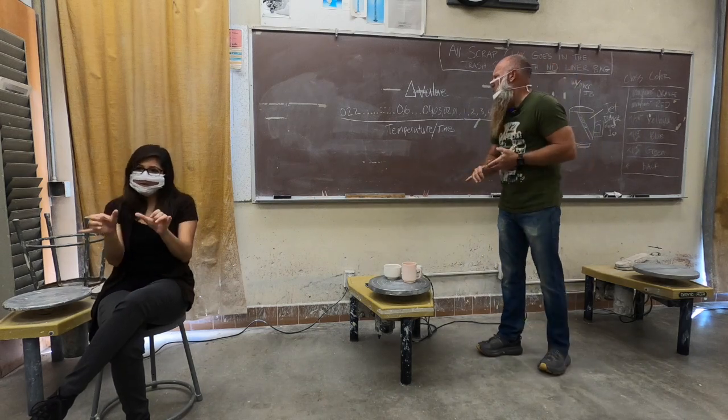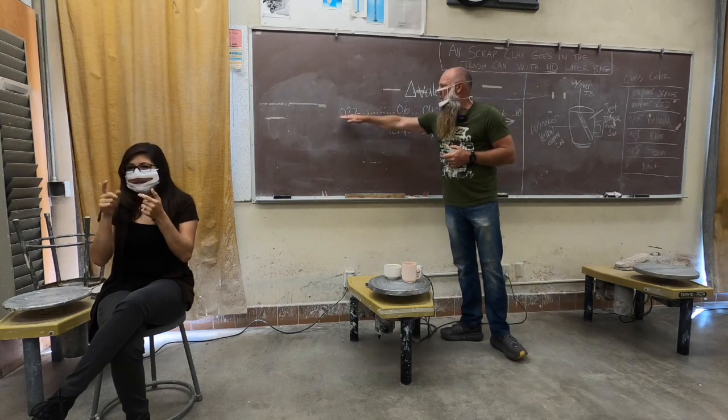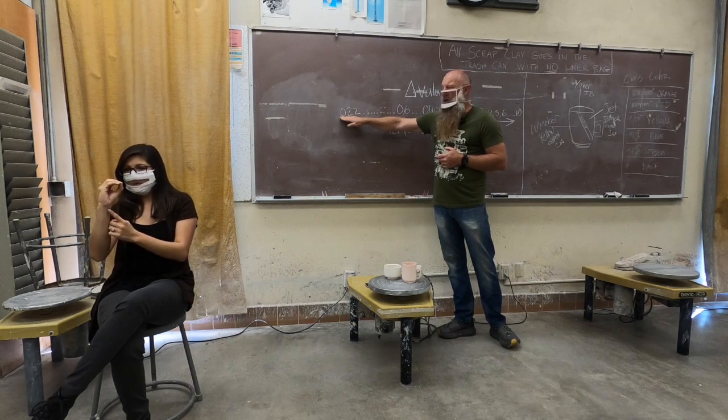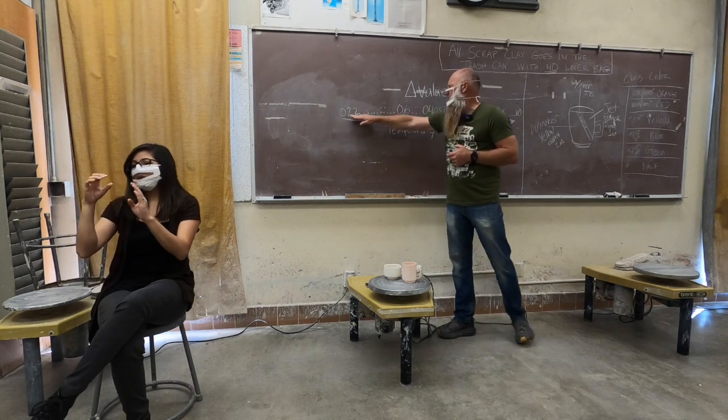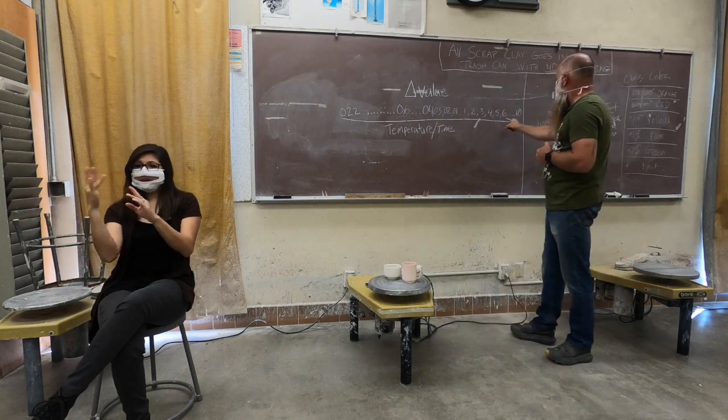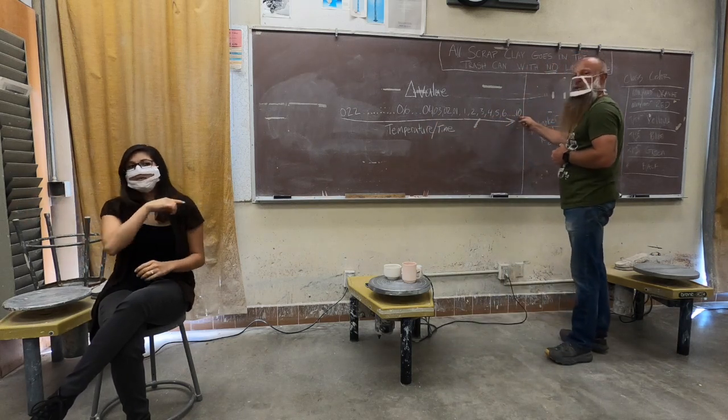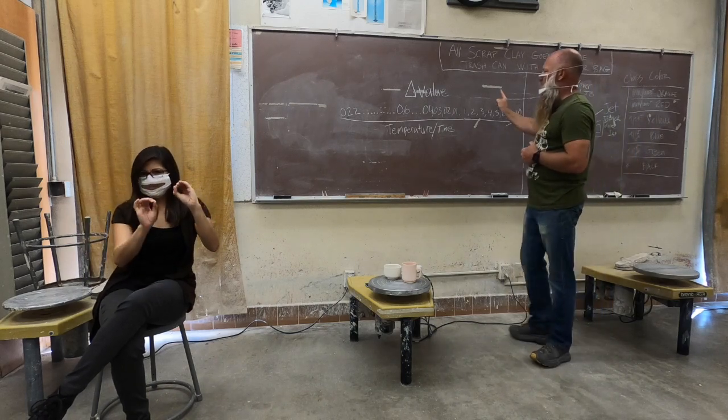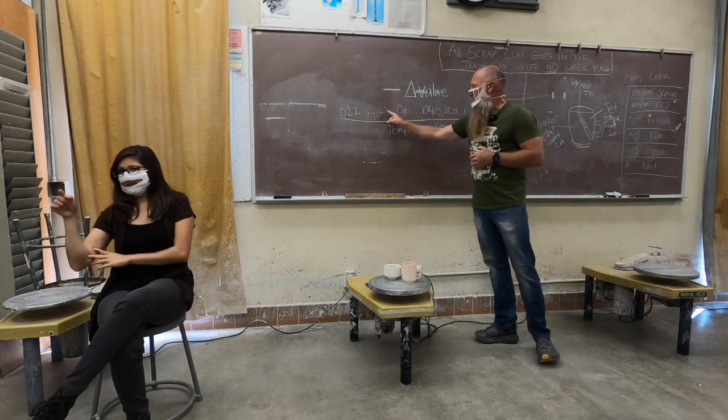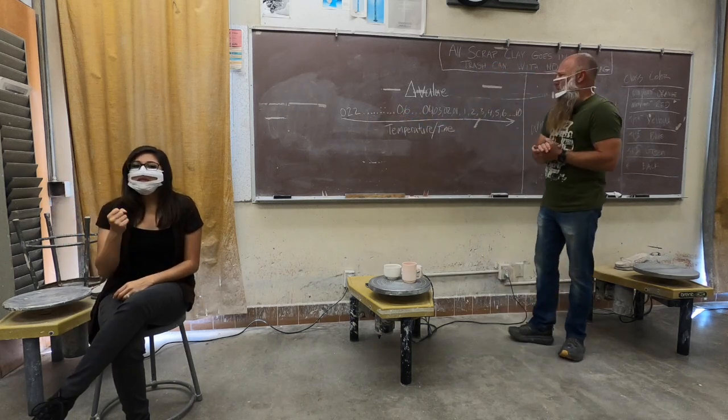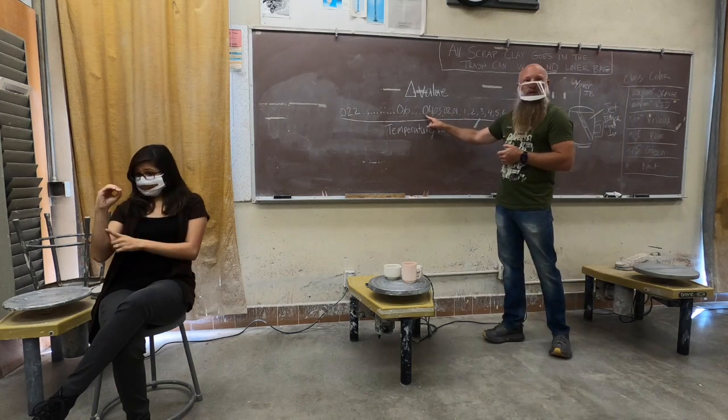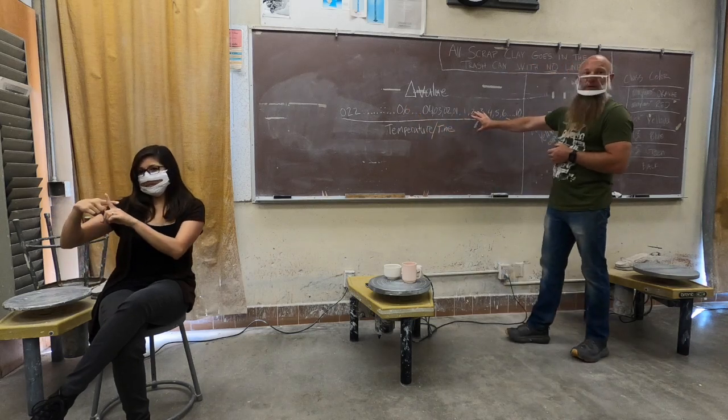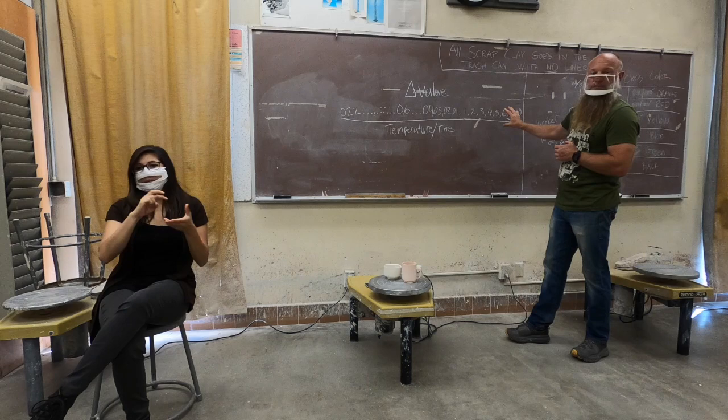So we're going to talk really quickly about the cone values, how they start at these numbers down here that have a zero in front of them. So this would be called cone O22. And then we go up in temperature, going this direction on the scale until we get to cone 10. Notice there's no zero in front of that 10, right? There is a cone O10 that would be somewhere over here. So basically what it means is if you have a zero in front of the number, it's a lower temperature. If you don't have a zero in front of the number, it's a higher temperature.